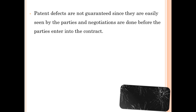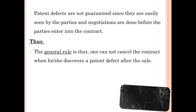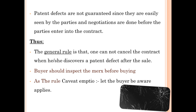Patent defects are not guaranteed by the seller since they are easily seen by the parties and negotiations are done before the parties enter into the contract of sale. The general rule is that one cannot cancel the contract when he or she discovers a patent defect after the sale. The buyer should inspect the thing before buying — the maxim caveat emptor, let the buyer beware, applies.